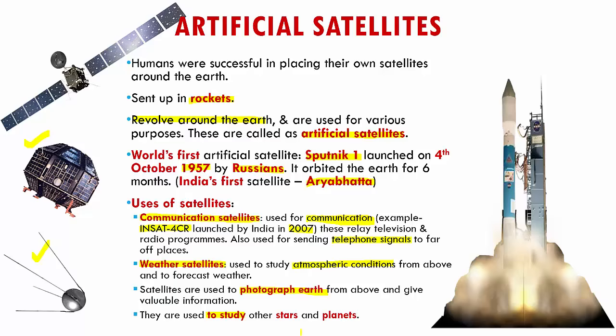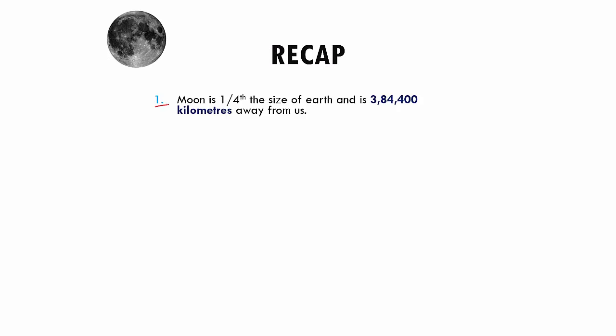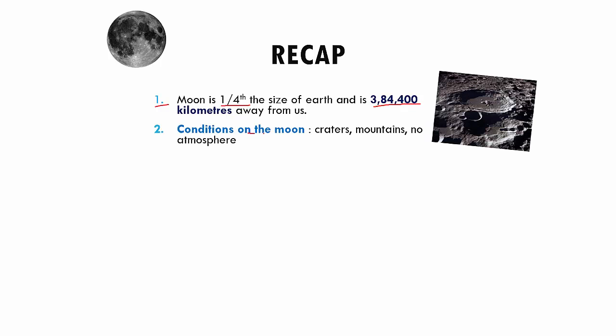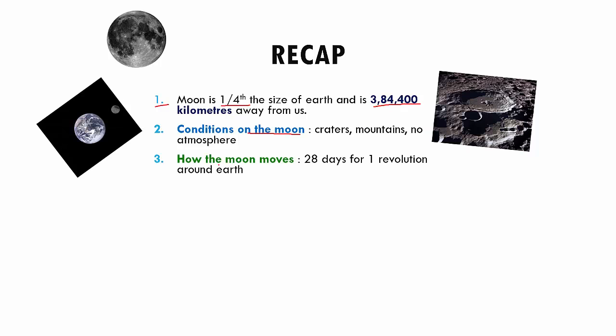So with this we wrap up the chapter about our friendly neighbour the moon. Let's quickly go through what we learnt. First, we looked at the moon and said it is quarter the size of the earth and at a distance of 3,84,400 km away from us. Then we saw the different conditions on the moon — the surface is full of pits called craters, it has mountains, it is covered with a layer of dust, and it has no atmosphere, because of which it becomes very hot during the day and extremely cold during the night. We also said that the moon revolves around the earth and takes about 28 days for one revolution.